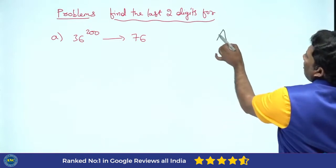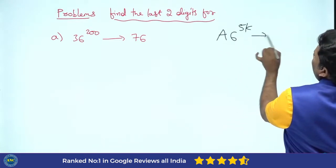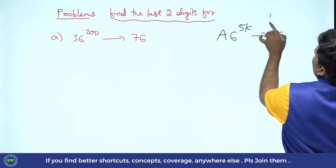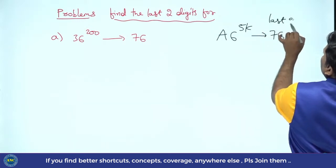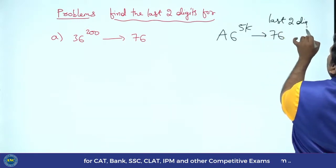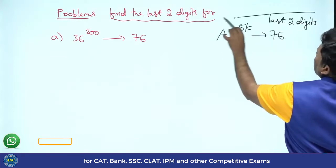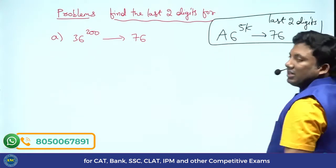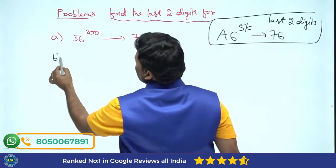So what is the logic? Any number ending with 6, if the power is a multiple of 5, last two digits will be 76. Idea clear? A6 power 5k, directly you will get the answer.